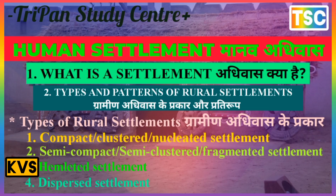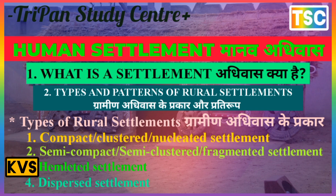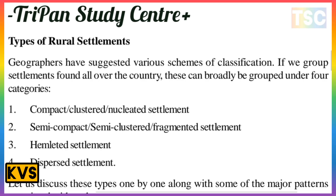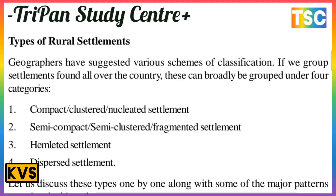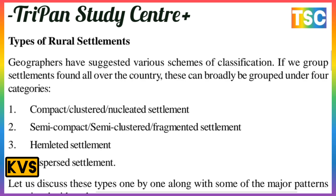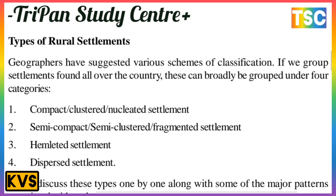Geographers have suggested various themes of classification. If we group settlements found all over the country, they can be broadly grouped under four categories: first, compact or clustered settlement; second, semi-compact settlement; third, hamleted settlement; and fourth, dispersed settlement.